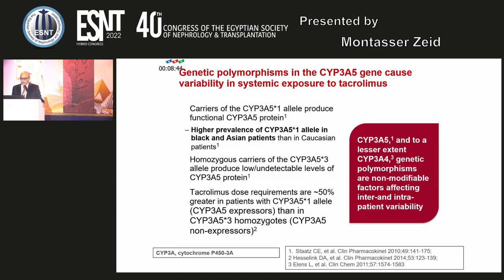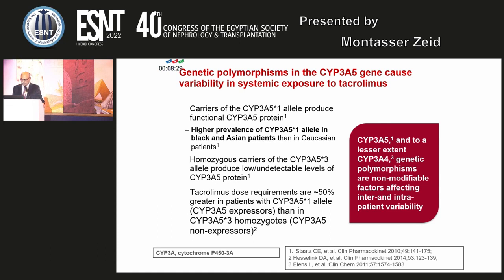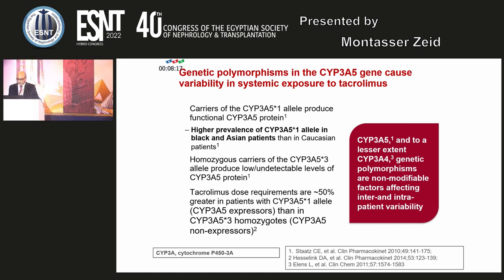Genetic polymorphism in the CYP3A5 gene causes variability in systemic exposure to tacrolimus. Tacrolimus dose requirements are about 50% greater in patients with the CYP3A5 expressor allele than in CYP3A5*3 homozygotes, which are the non-expressors. CYP3A5 and, to a lesser extent, CYP3A4 genetic polymorphisms are non-modifiable factors affecting inter- and intrapatient variability.